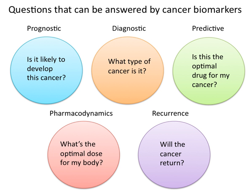A cancer biomarker refers to a substance or process that is indicative of the presence of cancer in the body. A biomarker may be a molecule secreted by a tumor or a specific response of the body to the presence of cancer. Genetic, epigenetic, proteomic, glycomic, and imaging biomarkers can be used for cancer diagnosis, prognosis, and epidemiology.